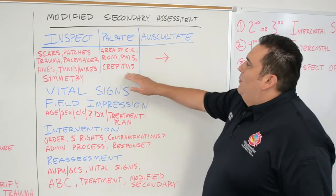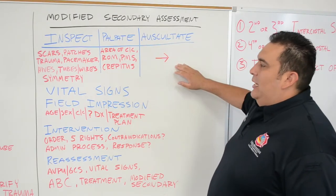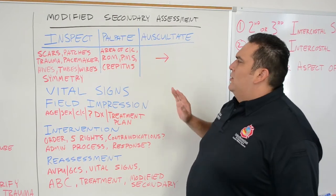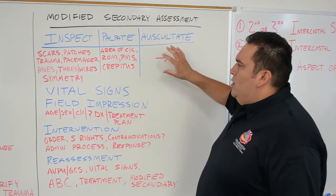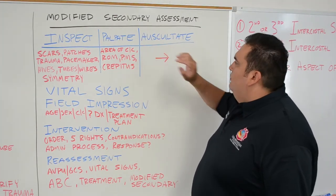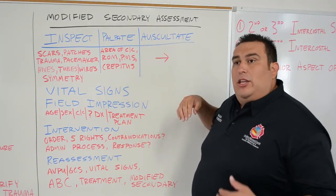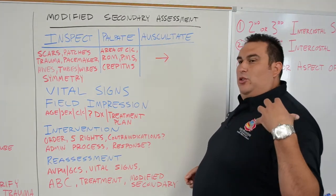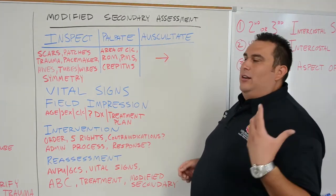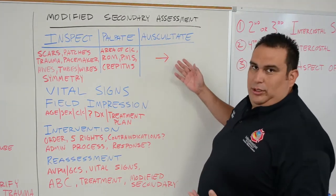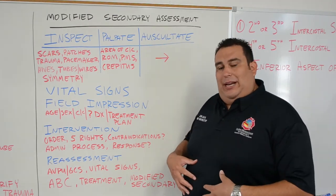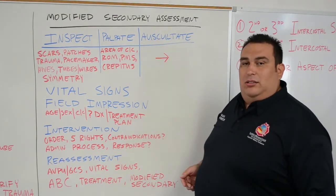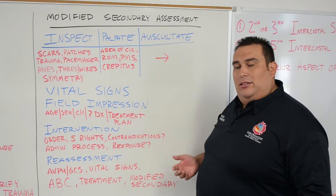Now that we've inspected, palpated, and auscultated the area in question, one thing to consider when you auscultate is the area in question. If you have somebody with shoulder pain, you're not going to auscultate the shoulder. If somebody has abdominal pain, technically yes, you can auscultate the abdomen and listen to gastric sounds.